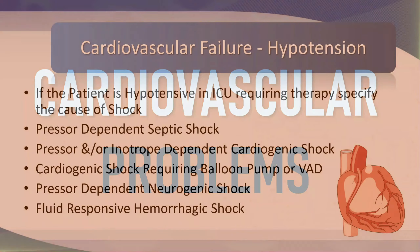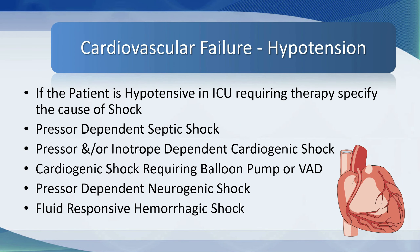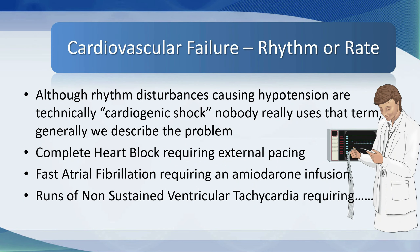Cardiovascular problems. If the patient is hypotensive in the ICU requiring therapy, then you really have to specify the cause of shock. For example, it might be pressor-dependent septic shock or pressor- and inotrope-dependent cardiogenic shock. Please do not mix up the terminology: vasopressors are drugs that bring up the blood pressure, versus inotropes that increase the stroke volume for a given end-diastolic volume. Cardiogenic shock may require intra-aortic balloon counterpulsation or a ventricular assist device or equivalent. Although rhythm disturbances causing hypotension are technically cardiogenic shock, nobody really uses that term.